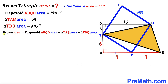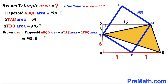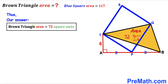Now we calculate the area of the brown shaded triangle. The trapezoid ABQD area is 148.5, the triangle TAB area is 54, and the triangle TDQ area is 22.5. So the brown triangle area equals 148.5 minus 54 minus 22.5, which simplifies to 72 square units. Therefore the area of this brown shaded triangle turns out to be 72 square units.